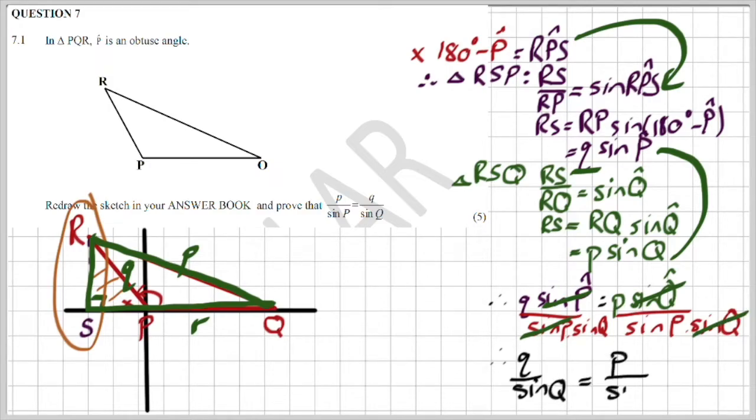And this leads me with Q over sin of Q equal to P over sin P. But sir, that's exactly what you asked me to prove. Ta-da! Magic!